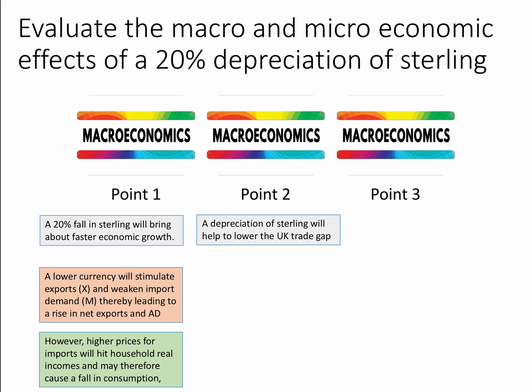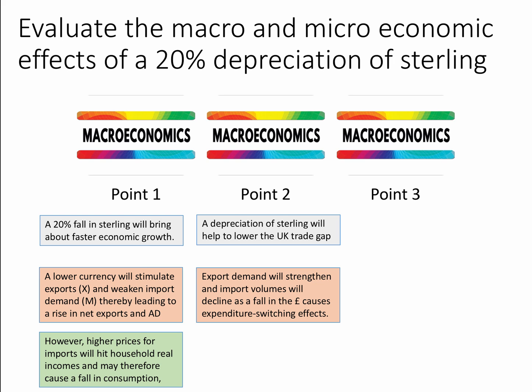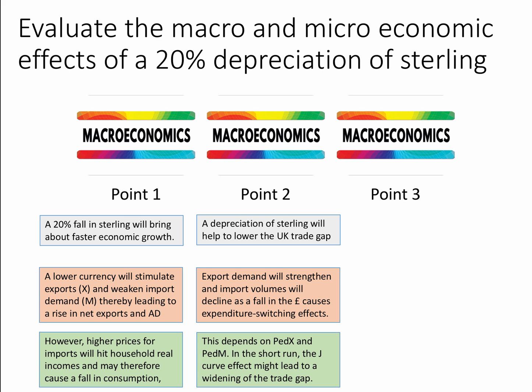Second macro point: depreciation of sterling may help lower the UK's trade gap — the big deficit between imports and exports in goods and services. Export demand will strengthen and import volumes will decline as the fall in the pound causes expenditure switching effects, so the export sector would grow and domestic producers take up more demand previously met by imports. However, this depends on the price elasticity of demand for exports and imports. In the short run, a fall in the pound could lead to a J-curve effect, which actually causes a widening of the trade gap. You could develop this by talking about the Marshall-Lerner condition — the conditions required for depreciation to improve the trade balance.